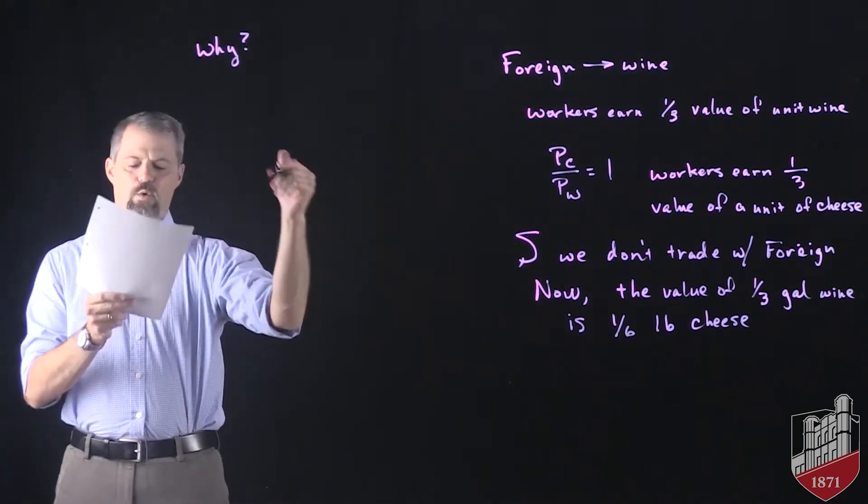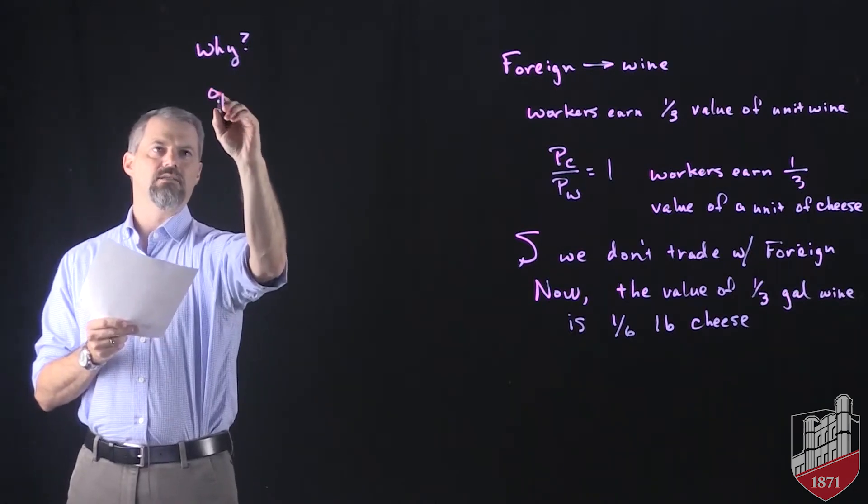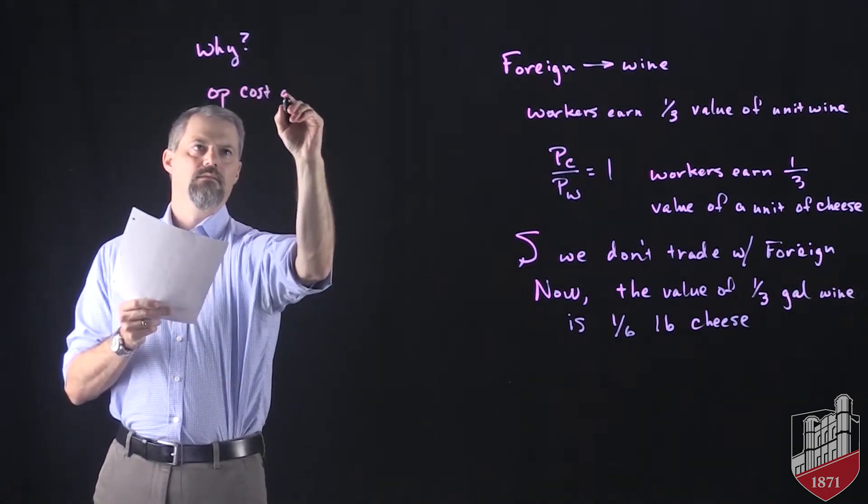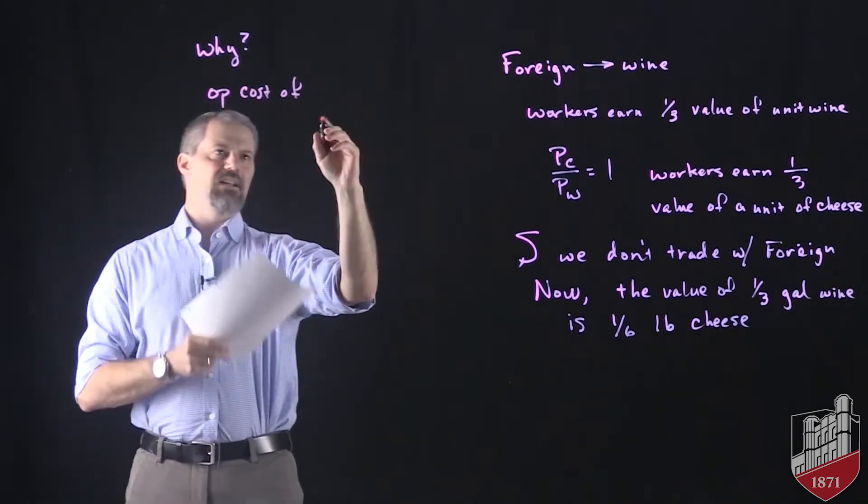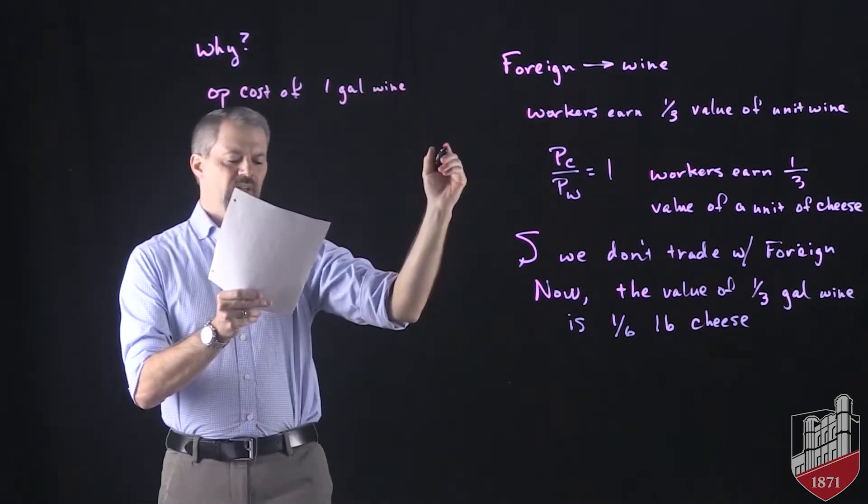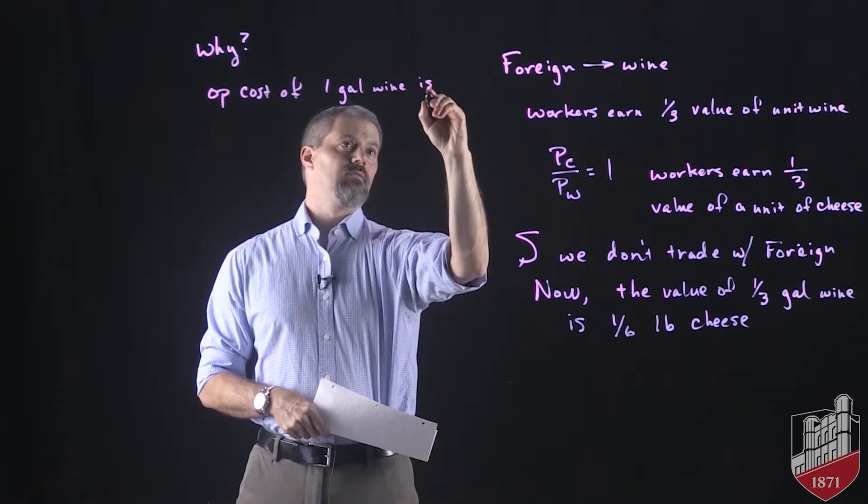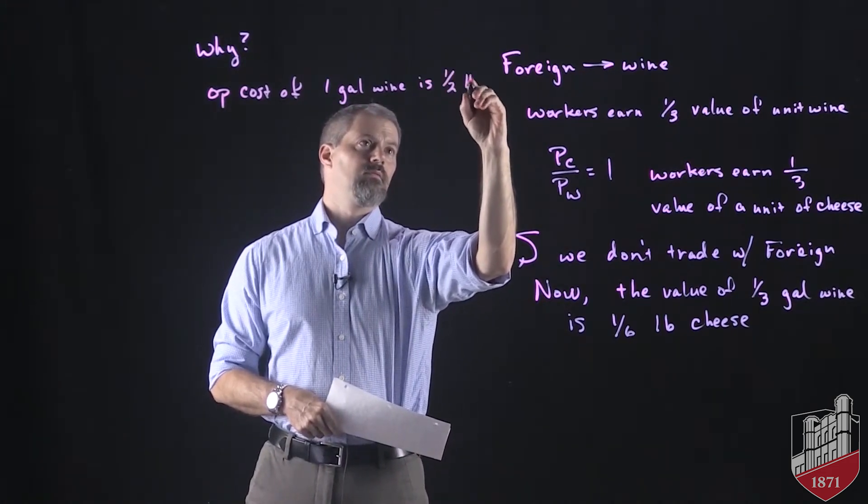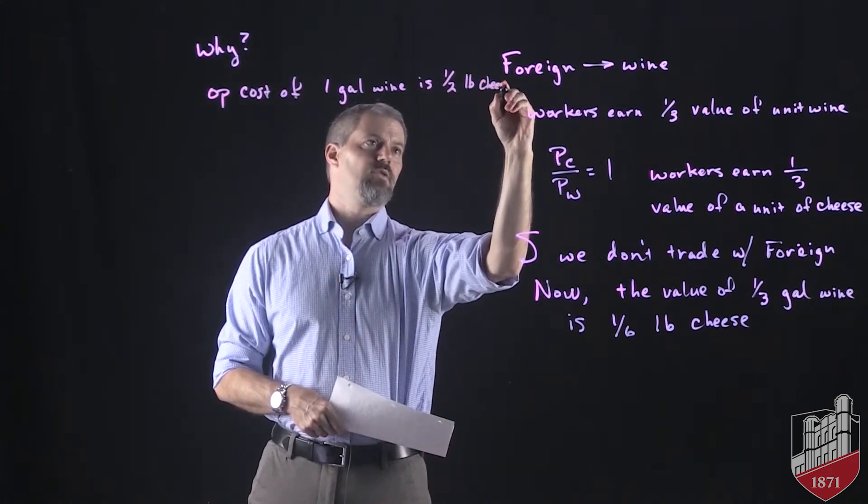So we know that in foreign, the opportunity cost of one gallon of wine is one-half pound of cheese. Squeeze that in there.